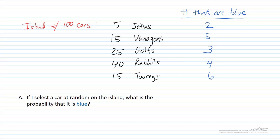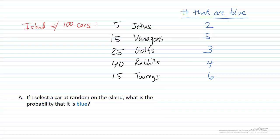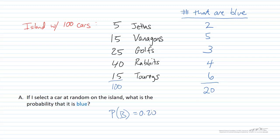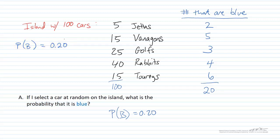The first question is: if I select a car at random, what is the probability that it's going to be blue? If we tally the total number of blue cars, we get 20 blue cars out of 100. Therefore, the probability of B — a blue car — is equal to 0.2. If you just select any car at random, there's a 20% chance that it's going to be blue.